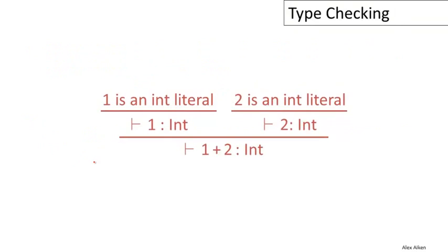As a concrete example, let's show that one plus two has type int. Since we know the rule for add, we need to construct a proof of the type of the number one and a proof of the type of the number two.